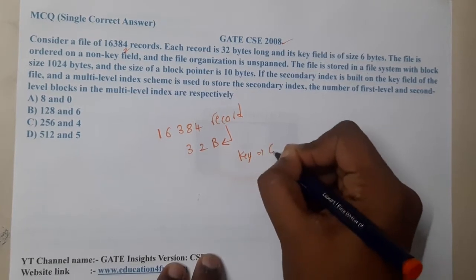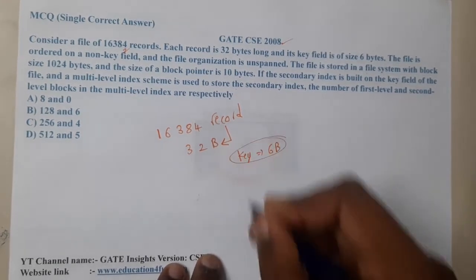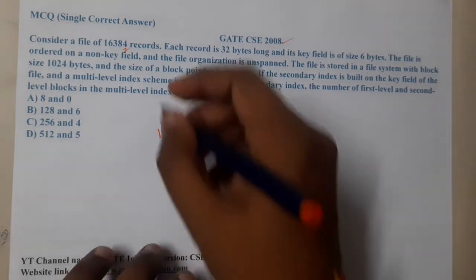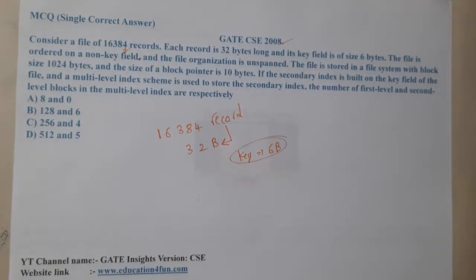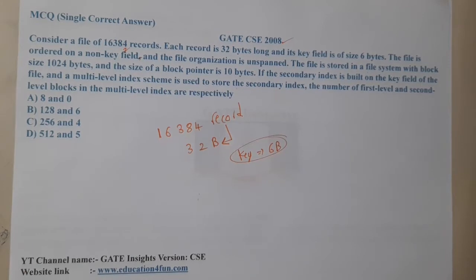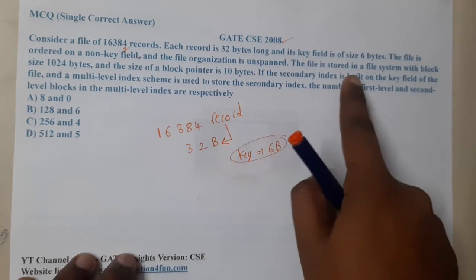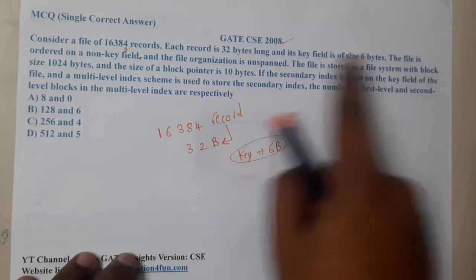The key value is 6 bytes. So if we are substituting in terms of indexing, it will carry 6 bytes each. The file is ordered on a non-key field, which is an important thing - it is ordered on a non-key attribute and the file organization is unspanned.